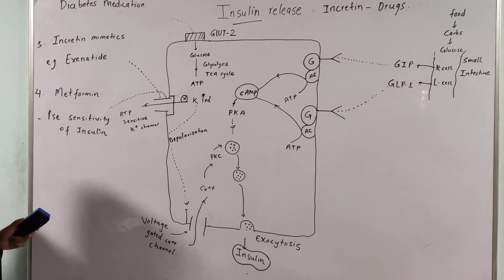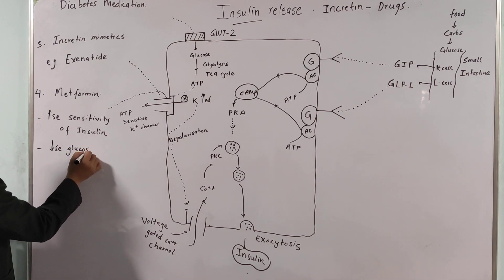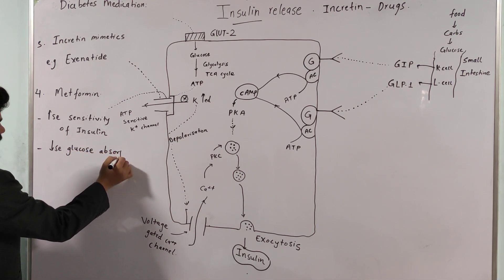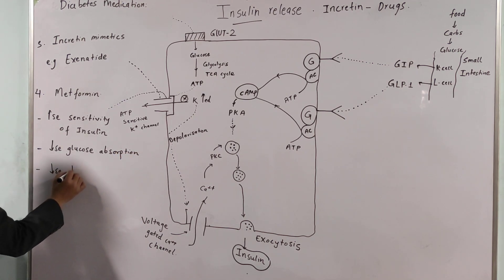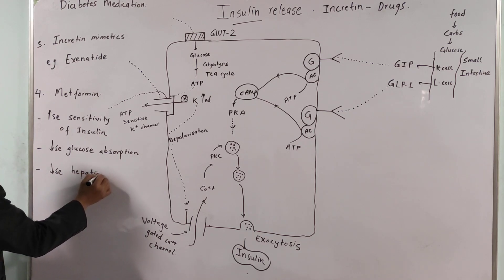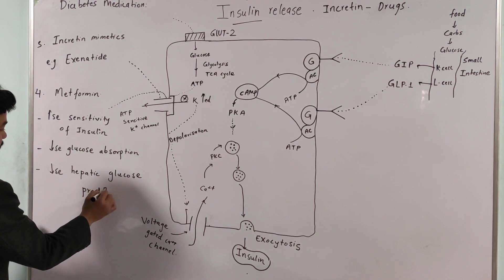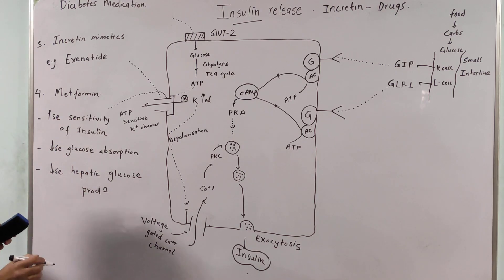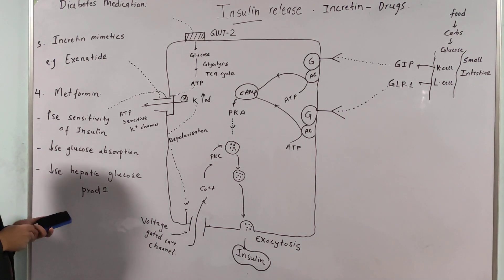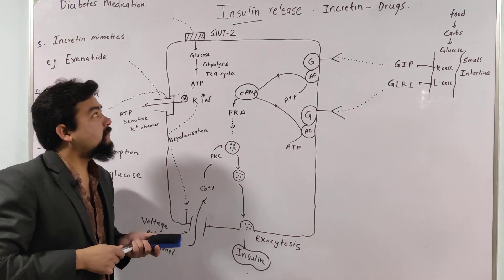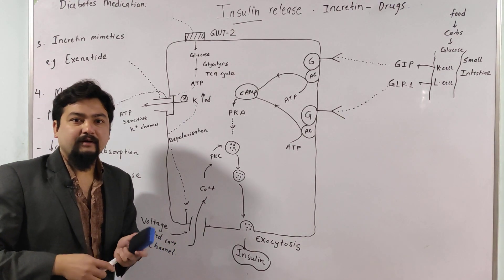Finally, we have metformin. Metformin doesn't bind to a receptor but it increases the sensitivity of insulin, making insulin more potent. Metformin also decreases glucose absorption from the intestine and decreases hepatic glucose production. All these actions ultimately decrease glucose levels in the blood. So friends, this is all about insulin release from beta cells of the pancreas. For any queries you can comment in the comment box — thank you.